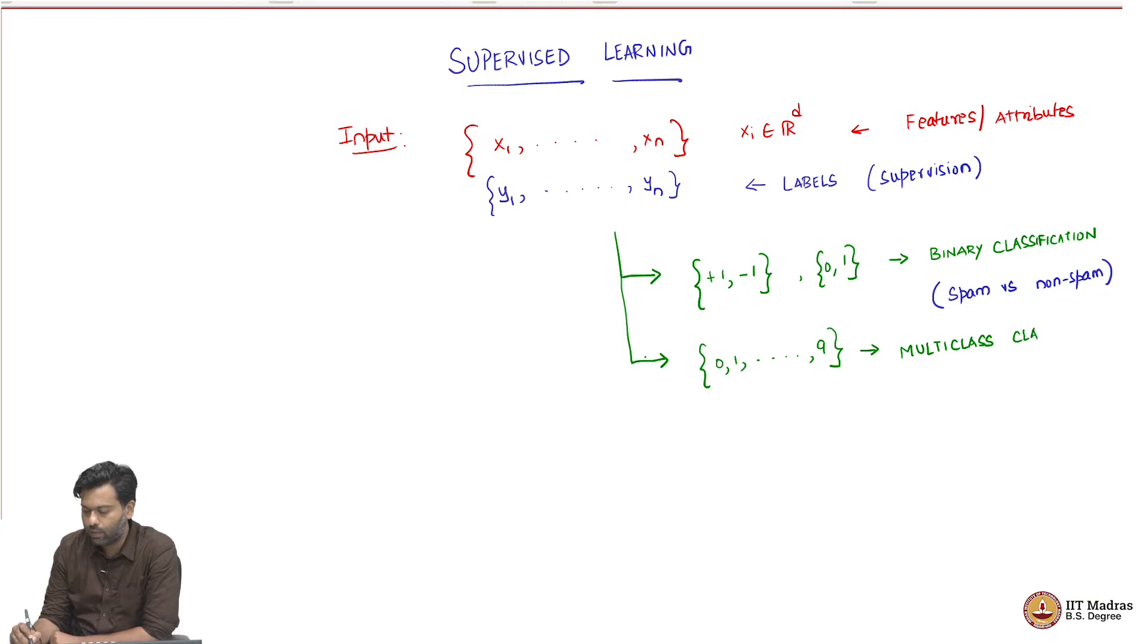Well, pause and think about it and I will tell you the answer now. One simple example where this might be the labels is a digit classification problem. So, you might have a written digit and then you would want to classify what is the digit that has been written. So, the image itself is your feature and then the label is the digit that has been written in this image. Of course, people write the same digit different ways and still we would want to recognize this as a learning system. And so, this is a multi-class classification problem.